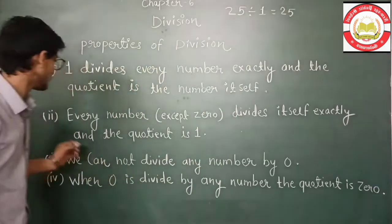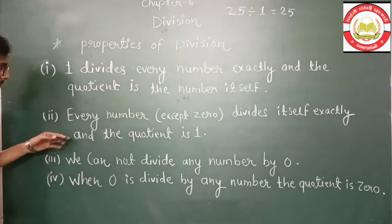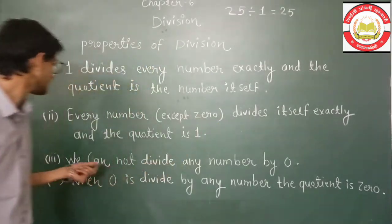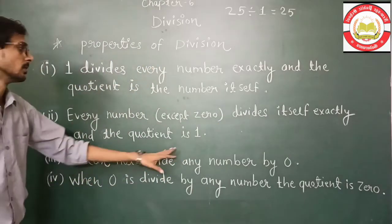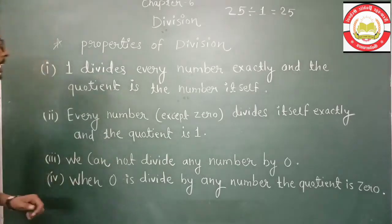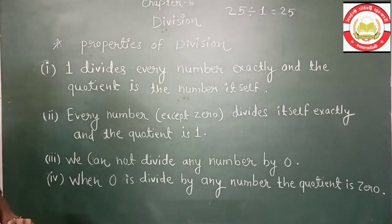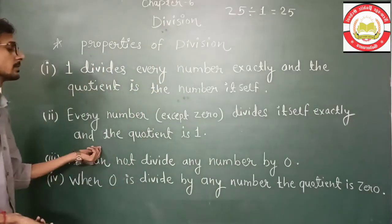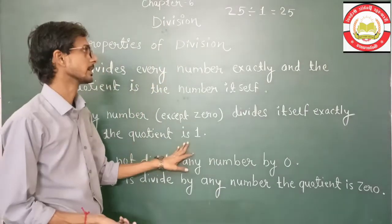Now second property is, every number except zero divides itself exactly and the quotient is one. So every number, kisi bhi number ko us hi number se divide karte hai, to answer aapka always one aayega.